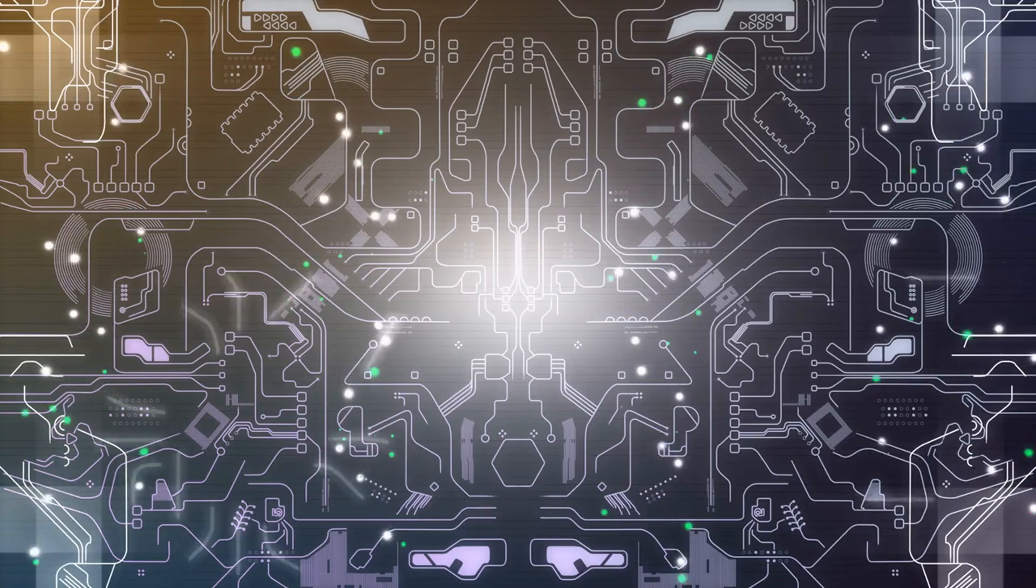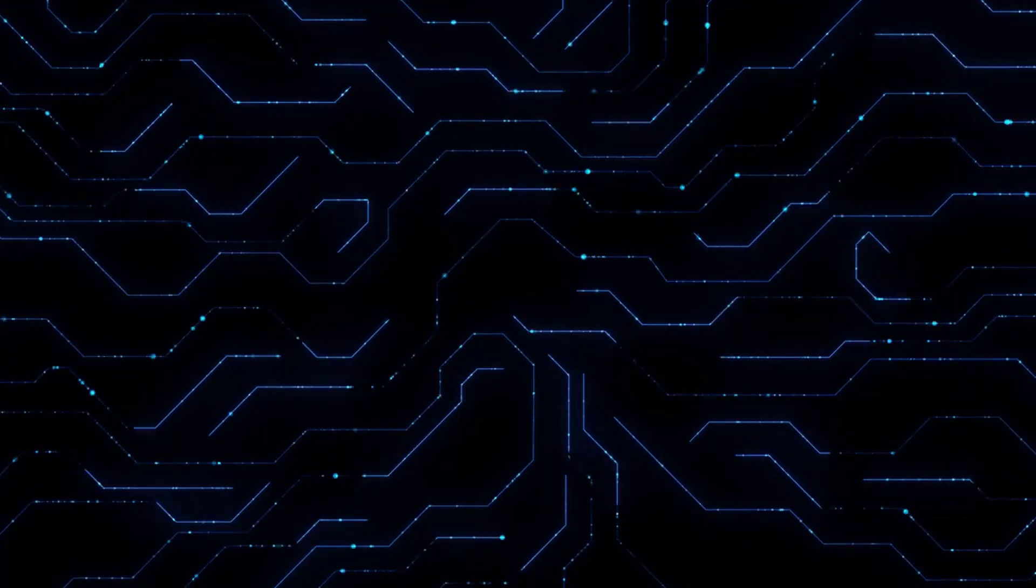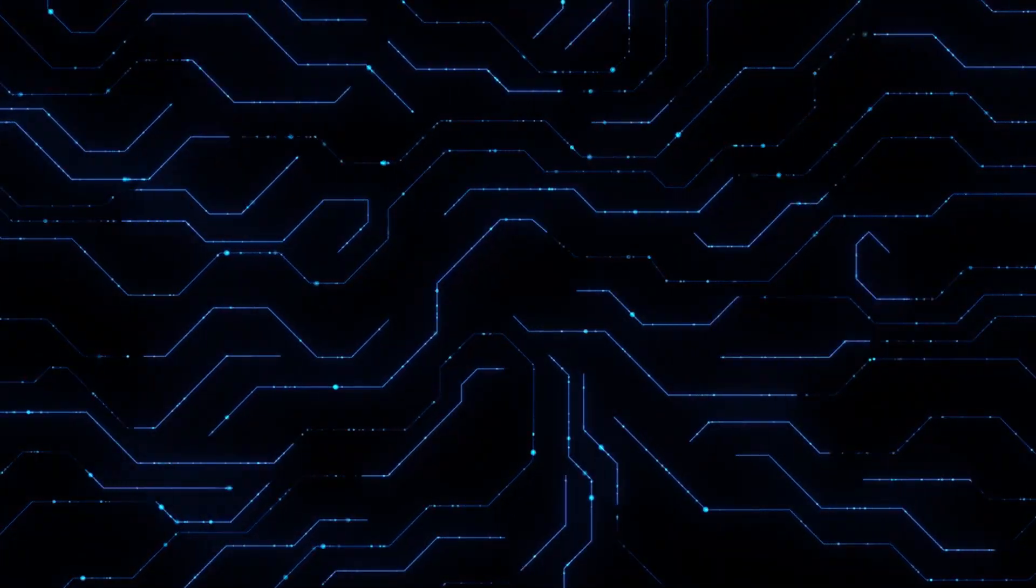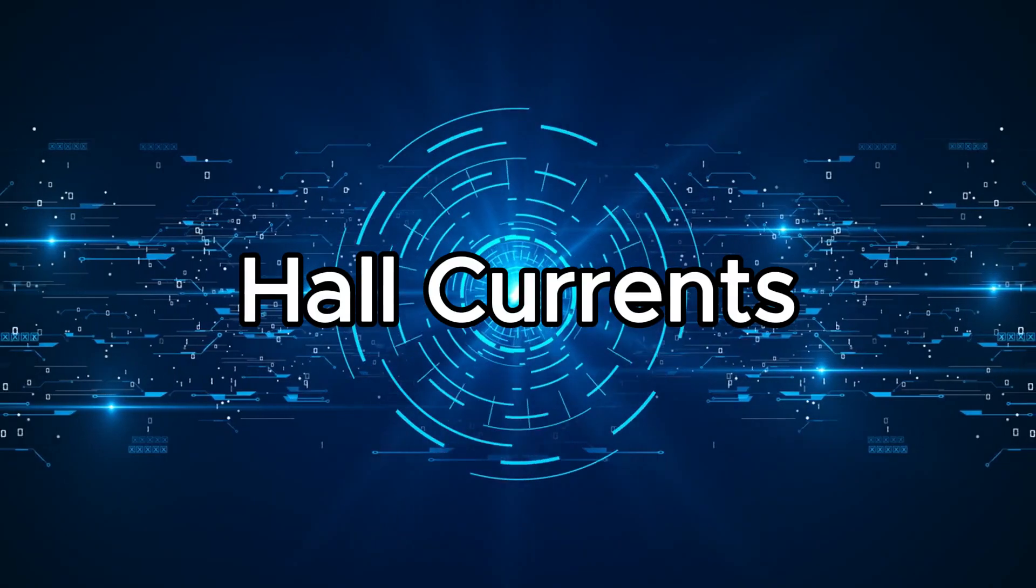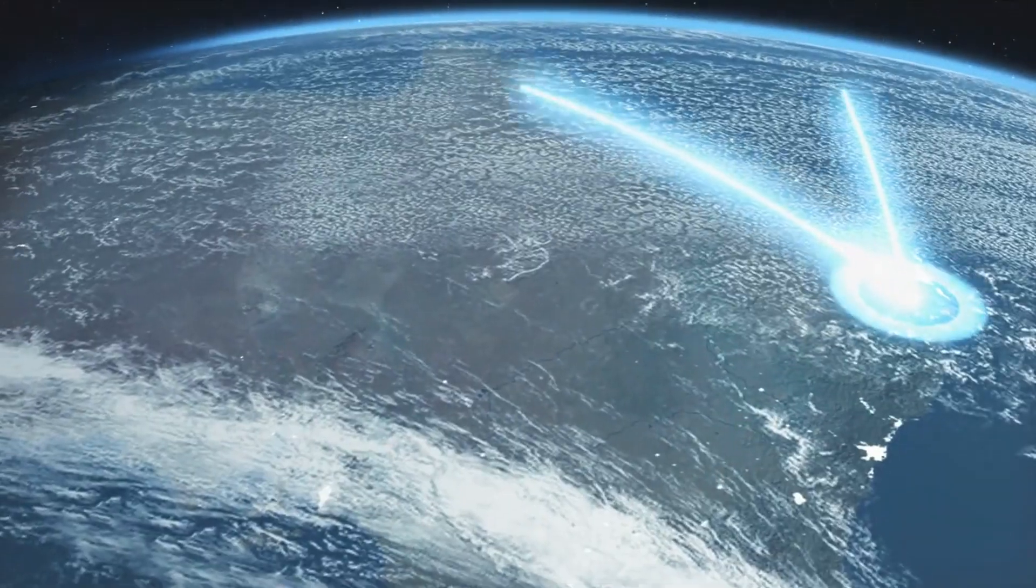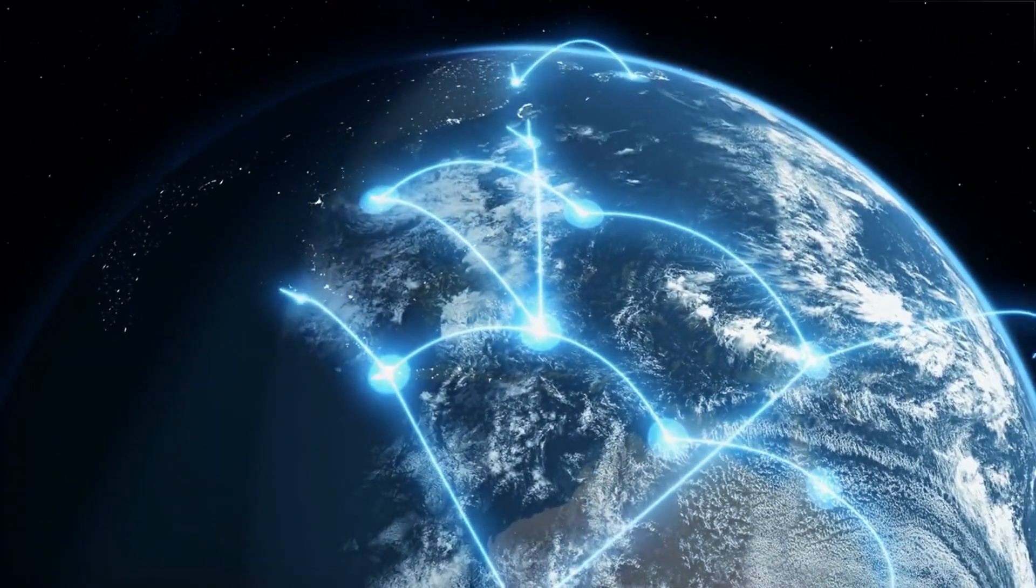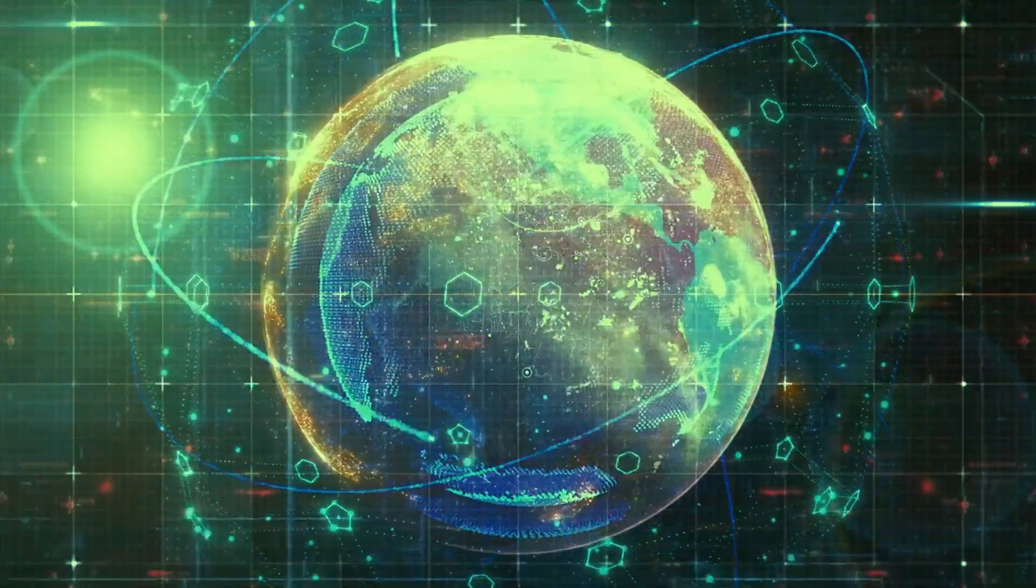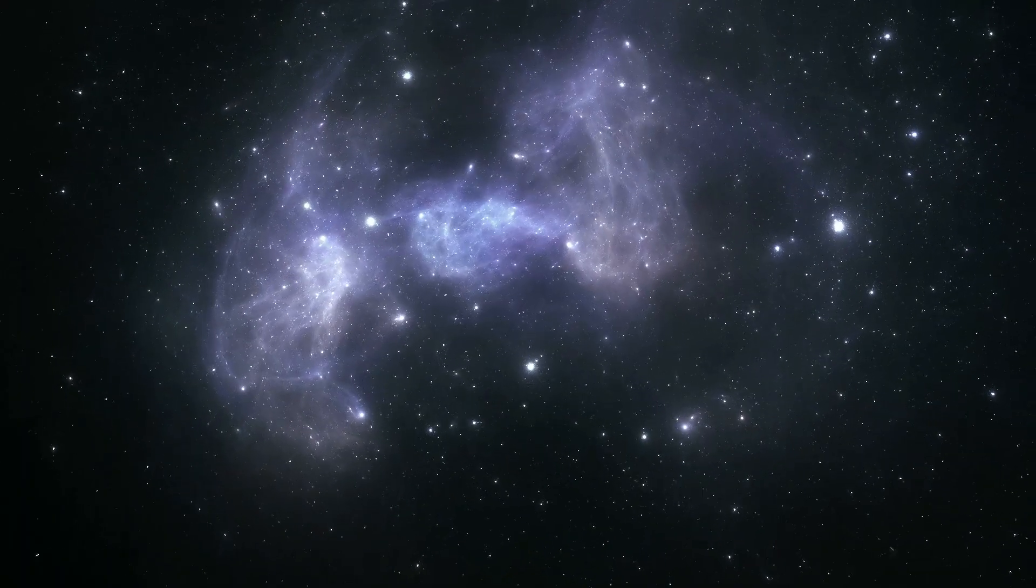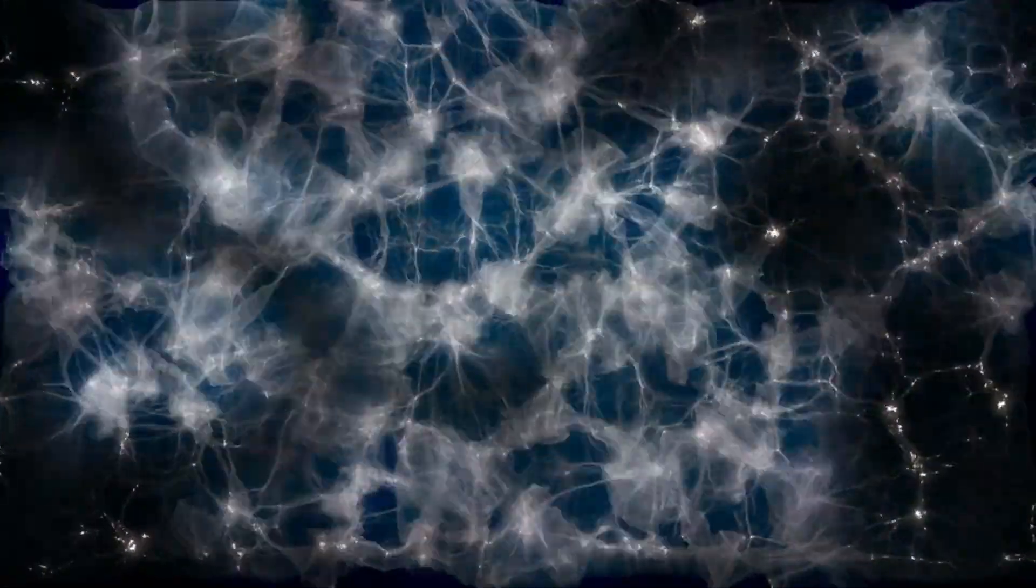Once in the ionosphere, the incoming Birkeland currents don't just stop. They spread out horizontally, creating two important secondary current systems, Pedersen and Hall currents. Pedersen currents flow with the electric field and cause heating in the upper atmosphere. Hall currents flow perpendicular to both the electric and magnetic fields, helping guide how charges move across the polar skies. This is how Earth becomes part of a living circuit, one that connects the solar wind, Earth's magnetosphere, the ionosphere and back out again. It's not just a light show, it's an electric feedback system on a planetary scale.